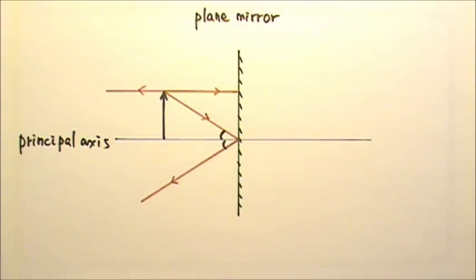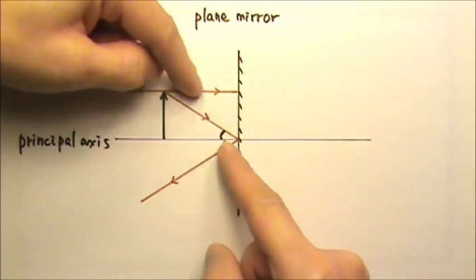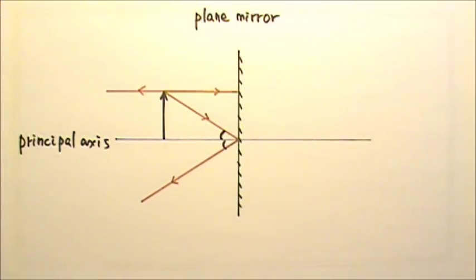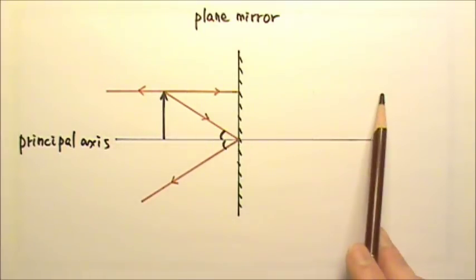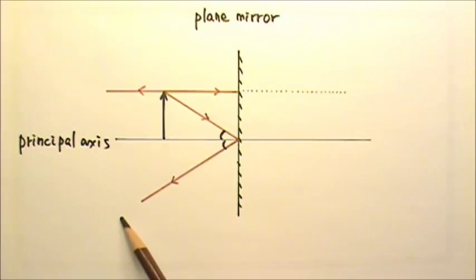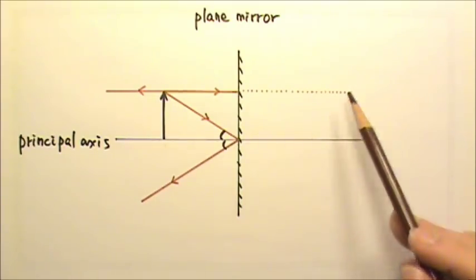An image is formed where the rays meet. However, in this case, the two reflected rays will never meet. But for an observer in front of the mirror, this ray can seem to come from anywhere along this straight line, and this ray can seem to come from anywhere along this straight line.